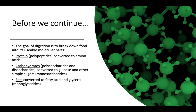The goal of digestion is to break down food into its usable molecular parts. Proteins, which are polypeptides, are converted to amino acids. Carbohydrates — polysaccharides and disaccharides — are converted to glucose and other simple sugars such as monosaccharides. Fats are converted to fatty acids and glycerol, which are monoglycerides.